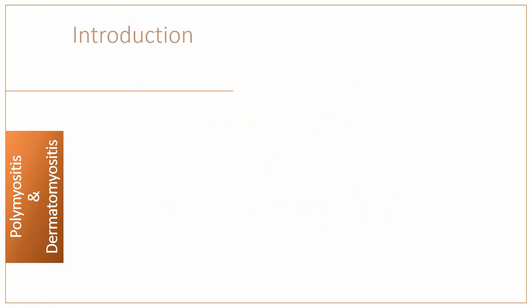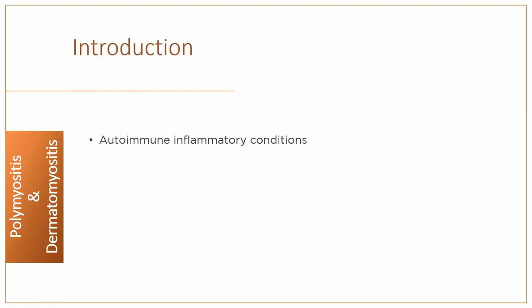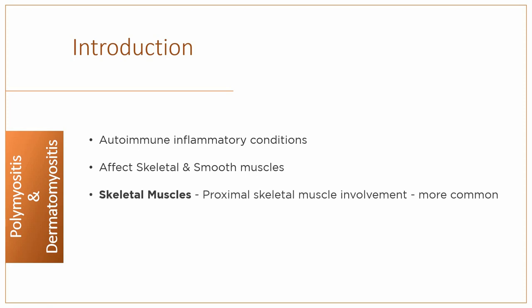Polymyositis and dermatomyositis are autoimmune inflammatory conditions affecting both skeletal as well as smooth muscles. Proximal skeletal muscle involvement is more common and patients therefore usually present with features of proximal muscle weakness. Among smooth muscles, cardiac and gut smooth muscles are commonly affected.